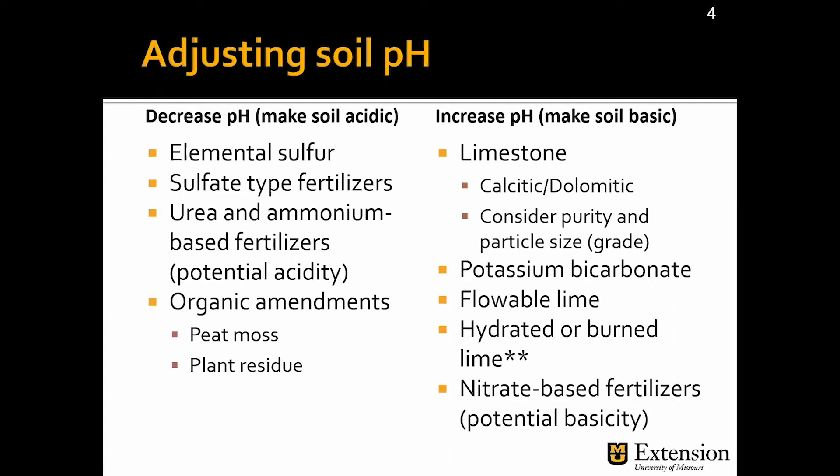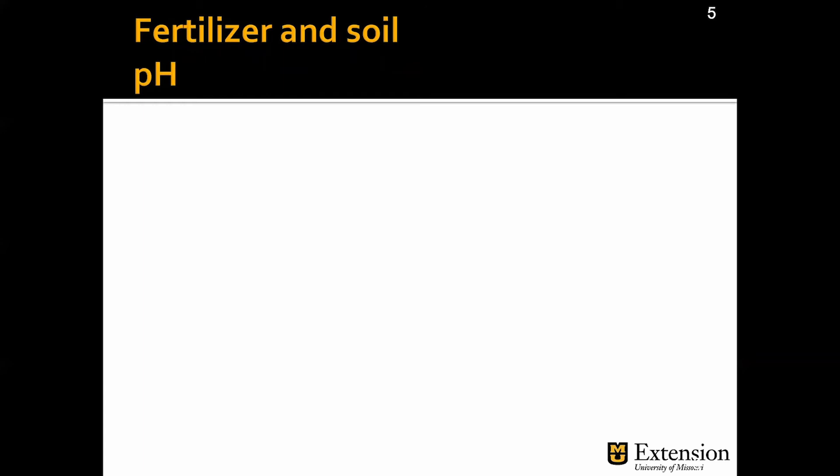You can also use fertilizers where the total nitrogen is mostly nitrate-based — check the label for potential acidity. Also think about your water source. If you have water with high alkalinity or water that's considered hard, over time this water is going to increase the pH of your soil if you do not neutralize that excessive alkalinity. Fertilizers will affect the soil pH because the components in the fertilizer will react with the soil and microbes will use these components for metabolism, and as a byproduct the pH of the soil will change.